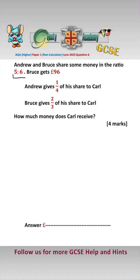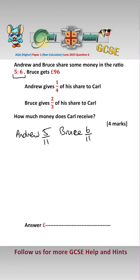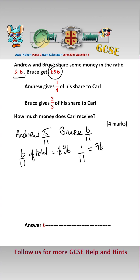If Andrew and Bruce share the money in the ratio 5 to 6, that means Andrew gets 5 elevenths of the total and Bruce gets 6 elevenths of the total. We know that 6 elevenths of the total money is equal to £96, so 1 eleventh is equal to 96 over 6, which equals £16.